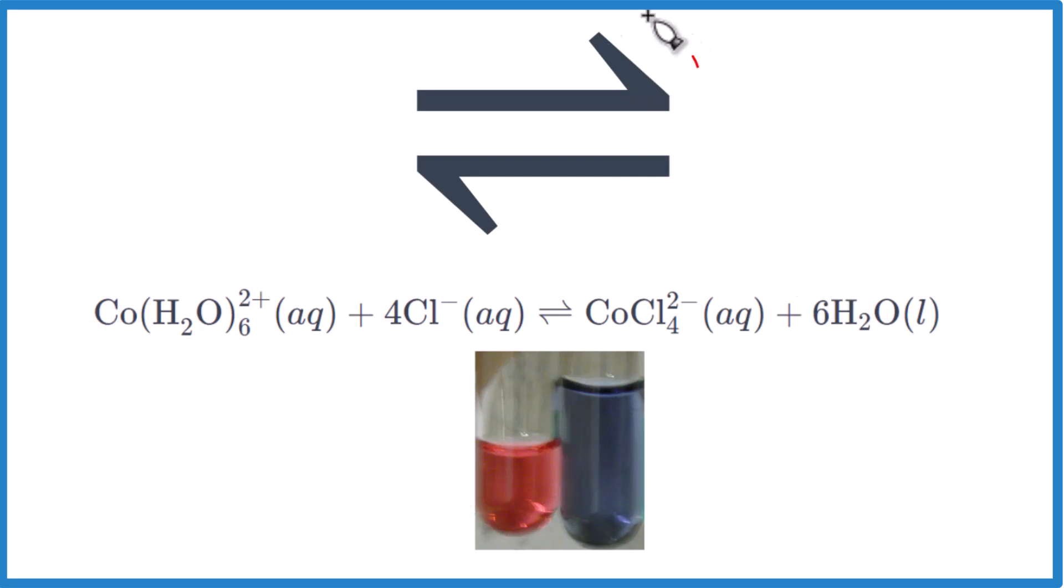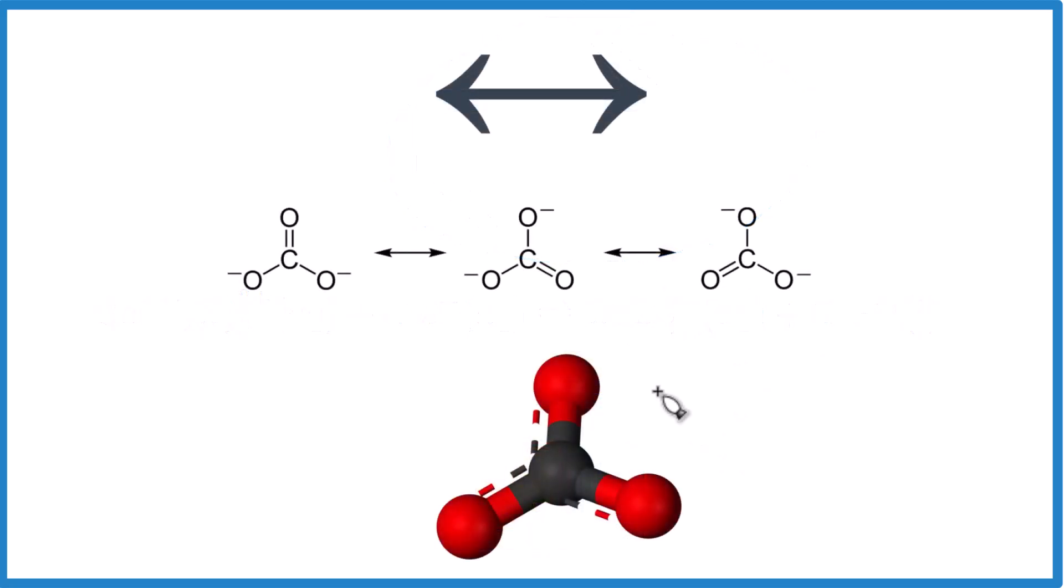Another one you'll see quite a bit in chemistry—one last symbol. This one is very different. This is for resonance. Essentially we could have a double bond on the top, this side or this side. These are called equivalent resonance structures.